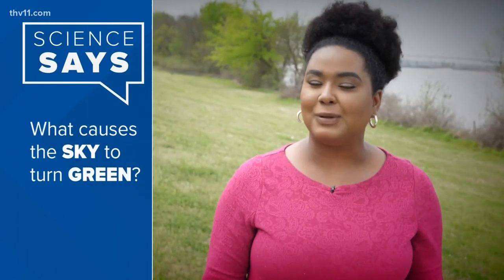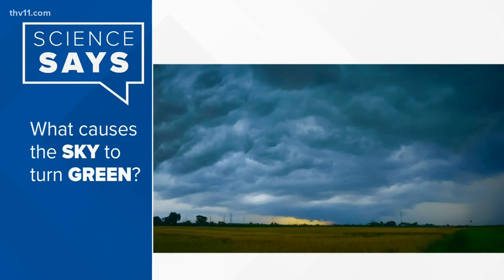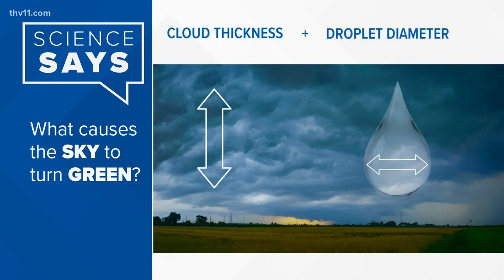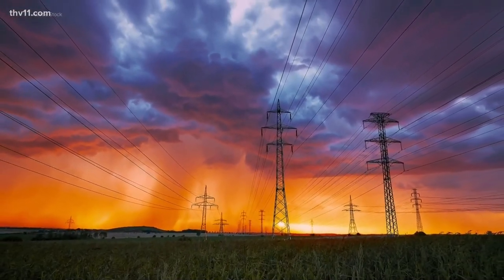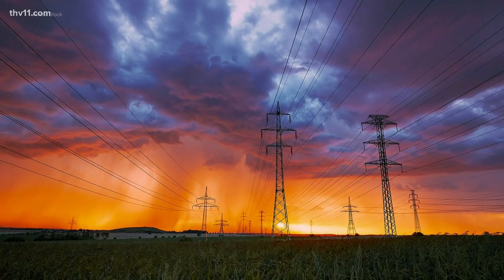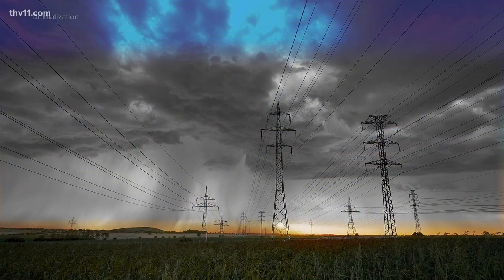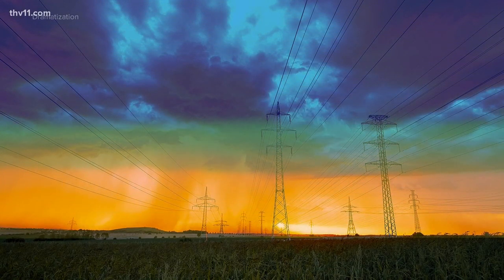Developing thunderstorm clouds tend to be tall. Normally storm clouds produce more of a bluish hue. The combination of a storm cloud's thickness and the diameter of the water droplets in them can make the clouds look green if the setup is just right. Thunderstorms usually occur and are strongest later in the day when the sun is setting, often producing yellow to reddish colors due to particles scattering the rays. Sometimes the combination of those sunset colors and the blue hue from the storm clouds can cast a greenish hue at the base of the cloud.